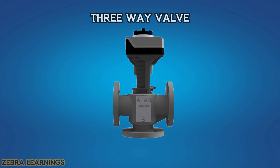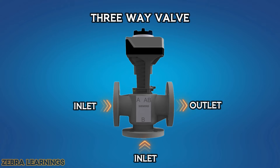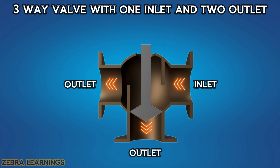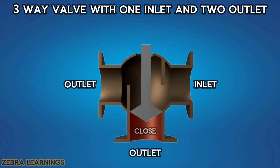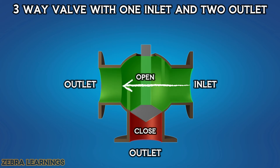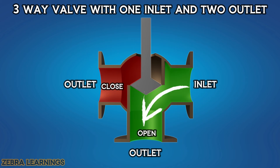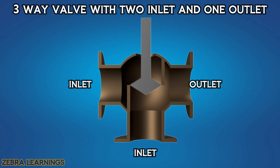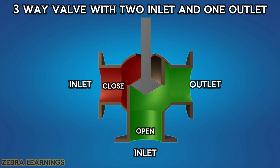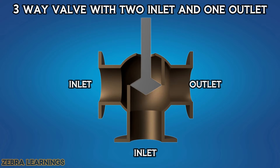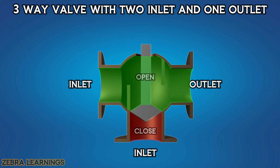A 3-way valve is a valve having 2 inlets and 1 outlet, or 2 outlets and 1 inlet. In a 3-way valve with 1 inlet and 2 outlets, one outlet is closed while the other outlet is open. When you close the open outlet, the closed outlet will open. In a 3-way valve with 2 inlets and 1 outlet, one inlet is closed while the other inlet is open. When the open inlet is closed, the closed inlet will open.